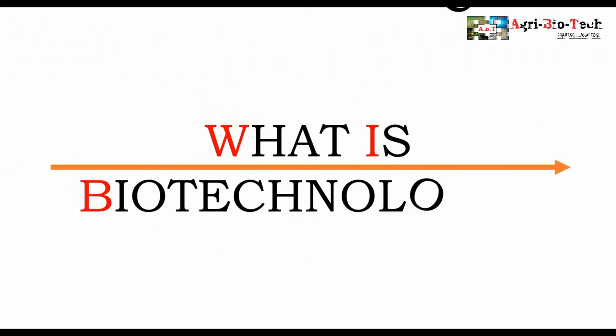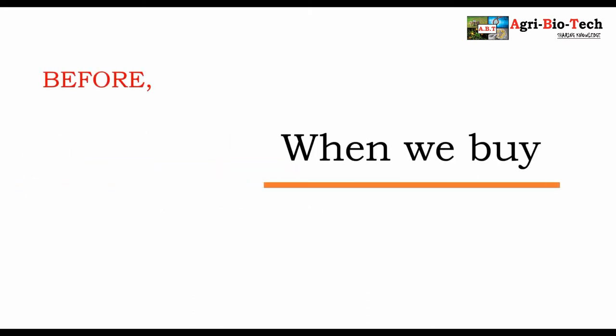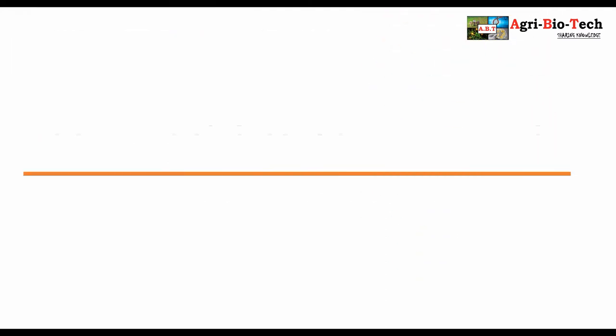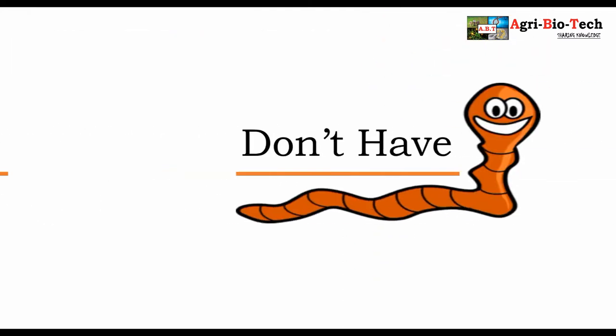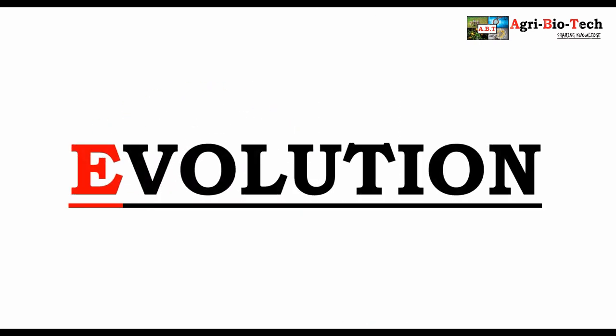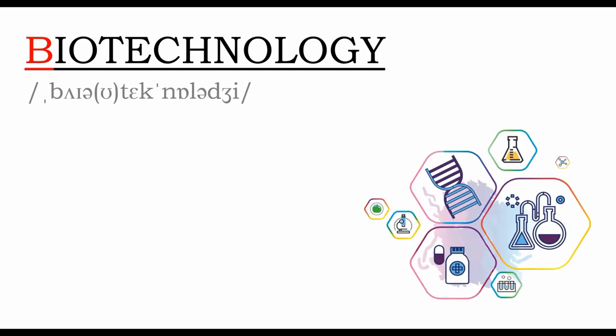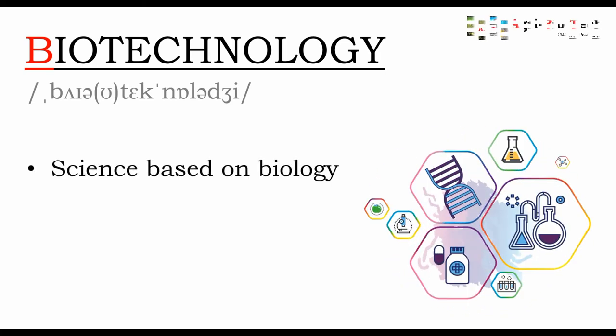The first question that comes to mind is: what is biotechnology? Let's go back some years ago. Before, when we bought a tomato, there was a 60% chance that the tomato would have worms inside or be rotten from inside. How did it happen that today's tomatoes don't have worms inside? It's somehow evolution, but specifically biotechnology. Biotechnology is the science that is based on biology.